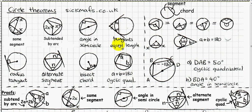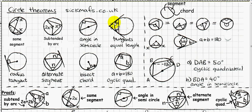Tangents from an external point have equal length, measured from where they meet the circle to where they meet each other. A tangent is simply a straight line that just touches the side of a circle without going through it — it sits on top and just touches it.